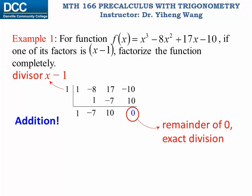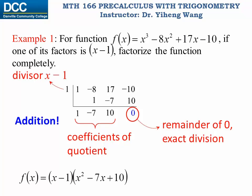Now how do we interpret this? These three numbers correspond to the coefficients of our quotient. In this case, this corresponds to a quadratic factor of x squared minus seven x plus ten, again in a strict descending order of the power of x. Therefore, our original function equals x minus one multiplied by x squared minus seven x plus ten, and this quadratic factor needs to be further factorized into linear factors only. And that completes the factorization.